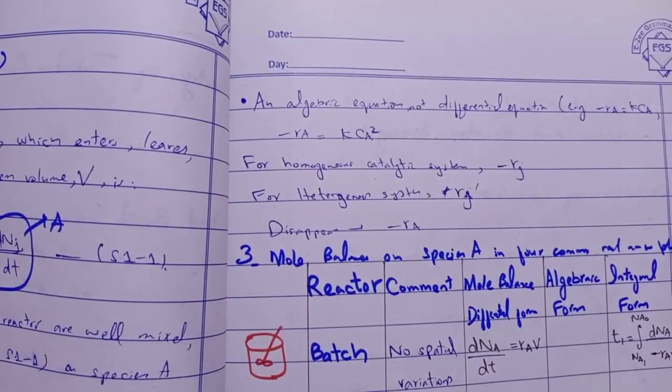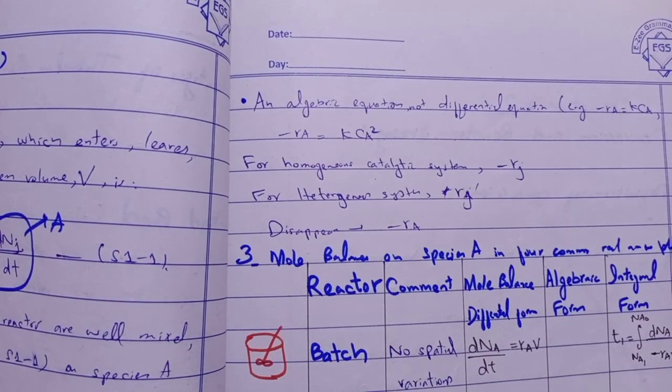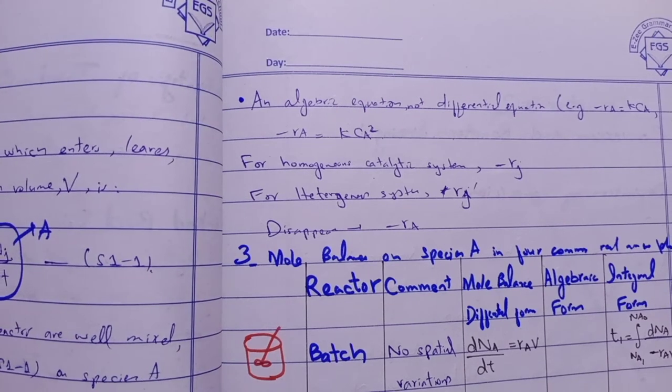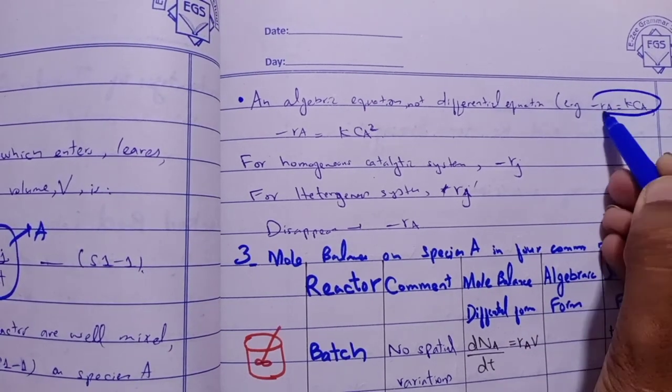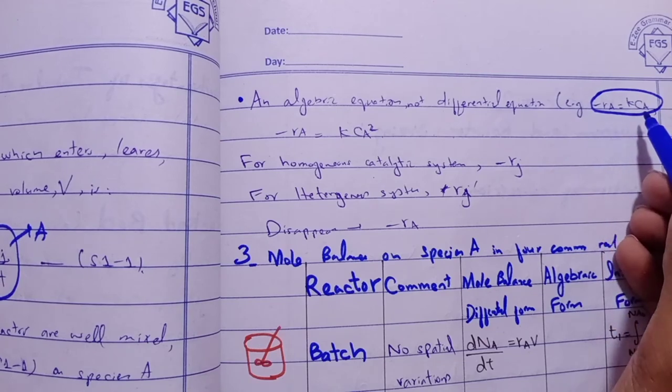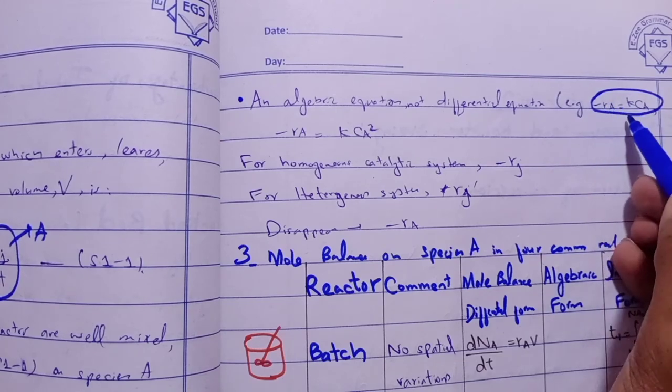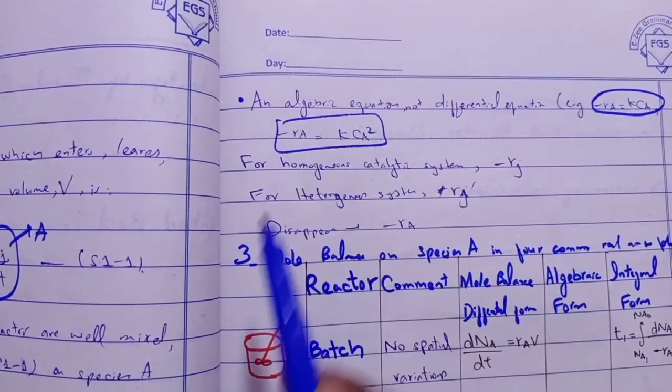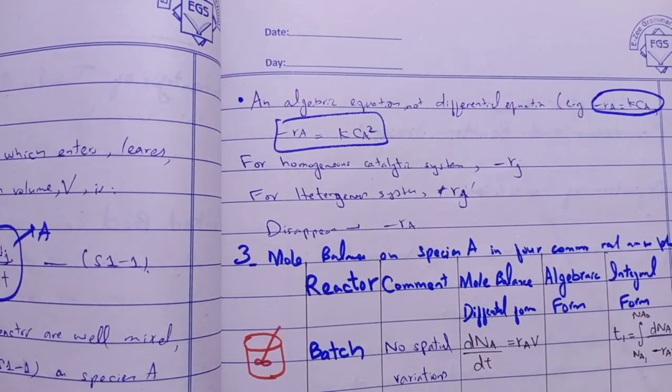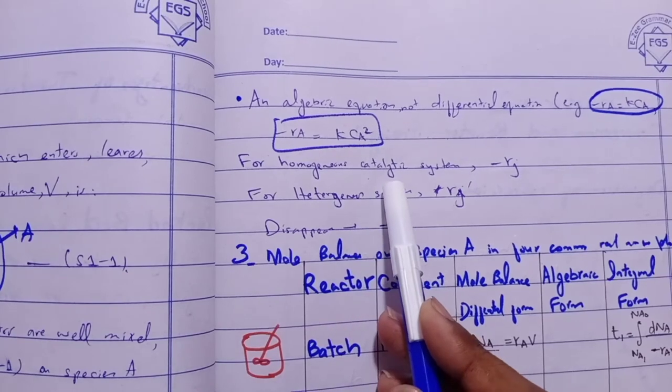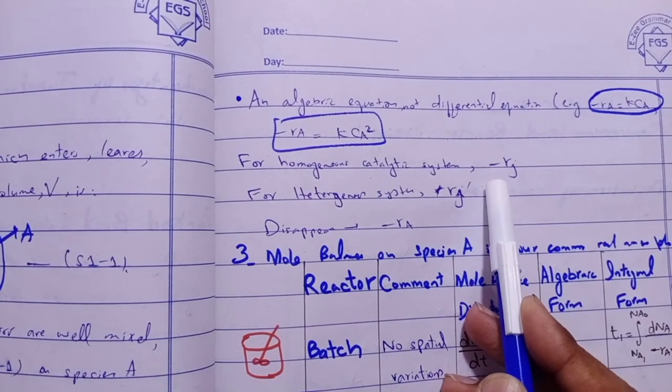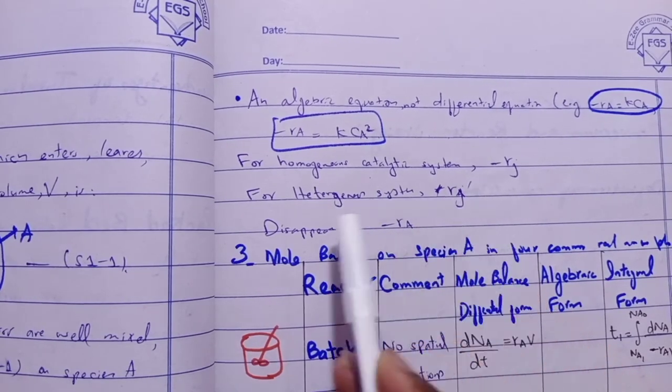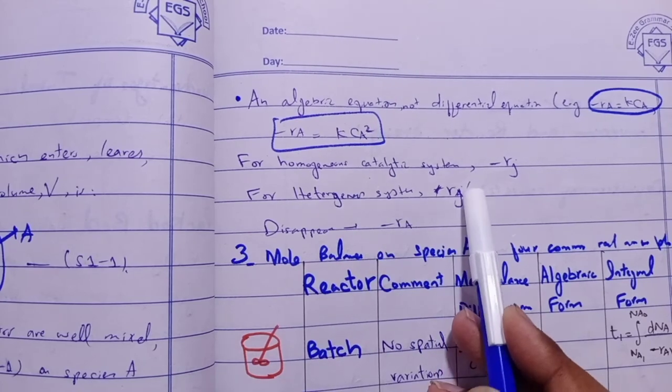So an algebraic equation, not differential equation. This is the first order reaction: -rA = kCA. Basically k is the rate constant, CA is concentration. This is the second order reaction. So for homogeneous catalyst reaction -rj, the minus shows the disappearance. For heterogeneous equation rj means per mass of catalyst.